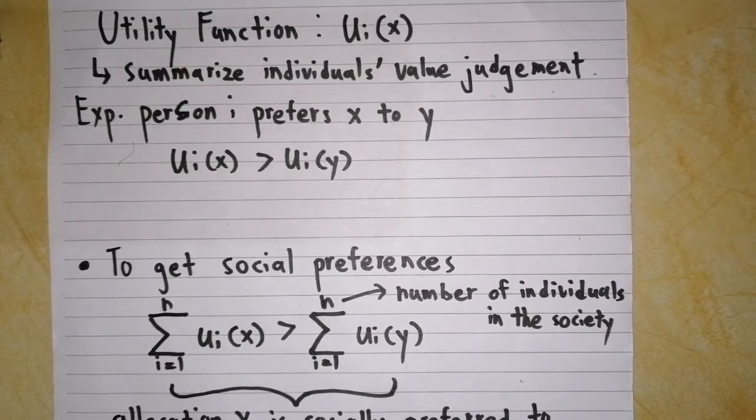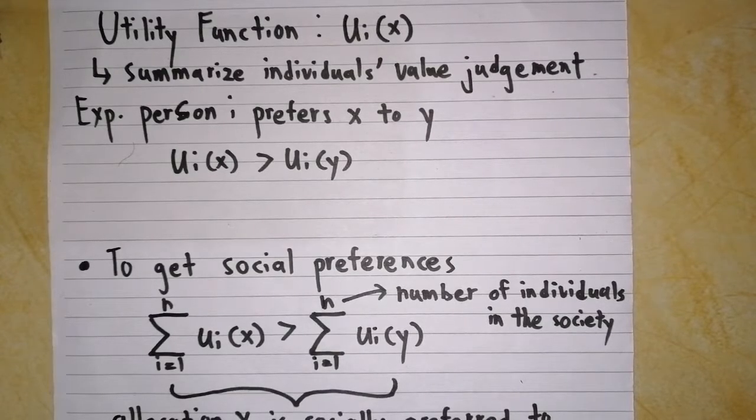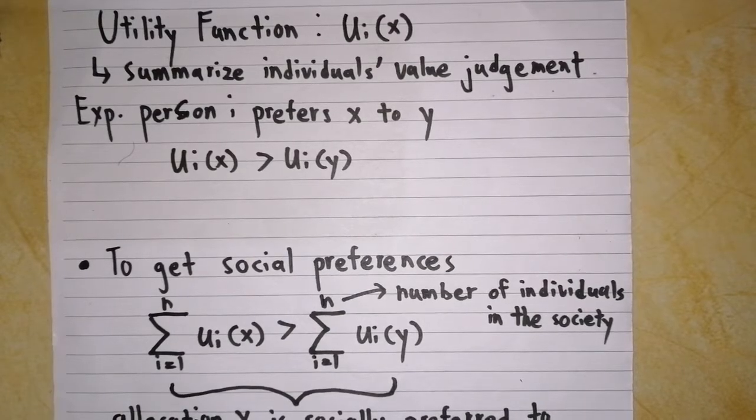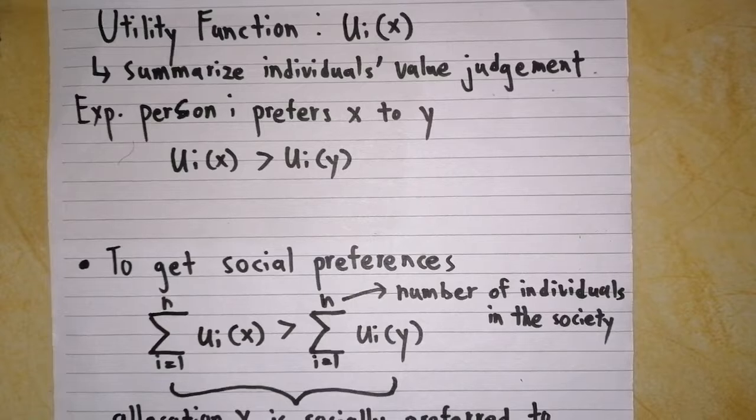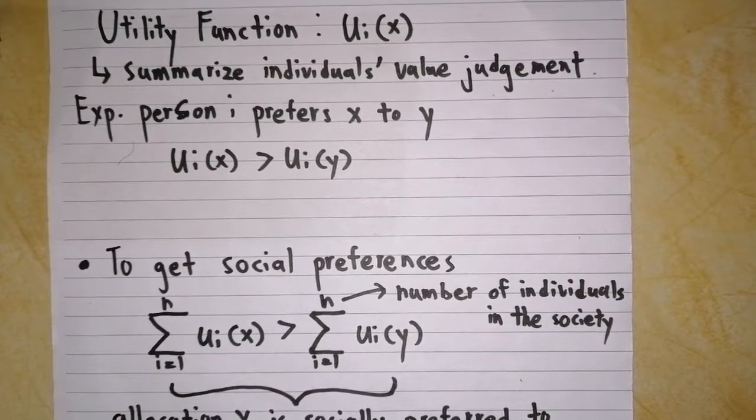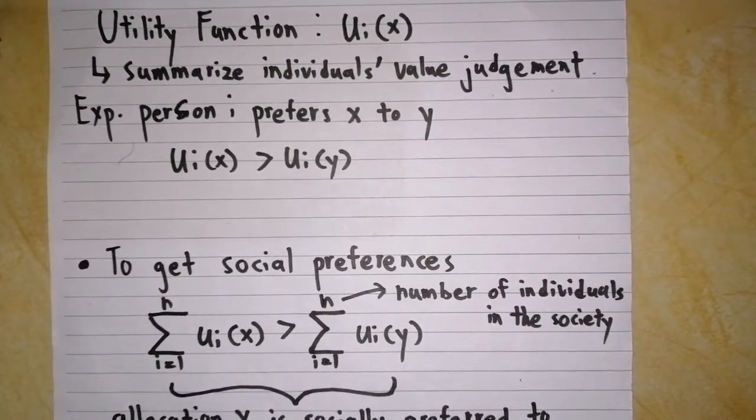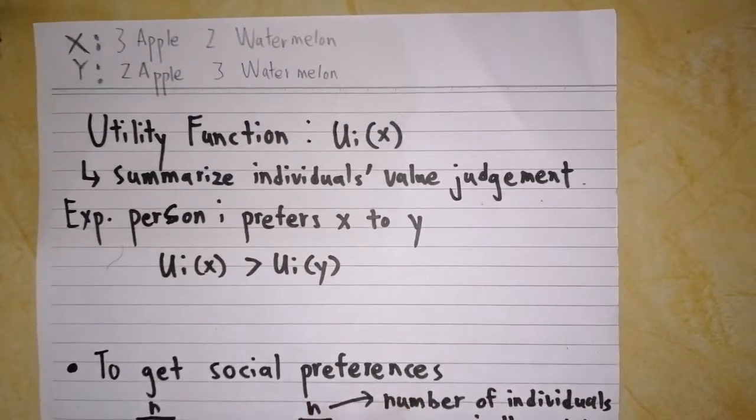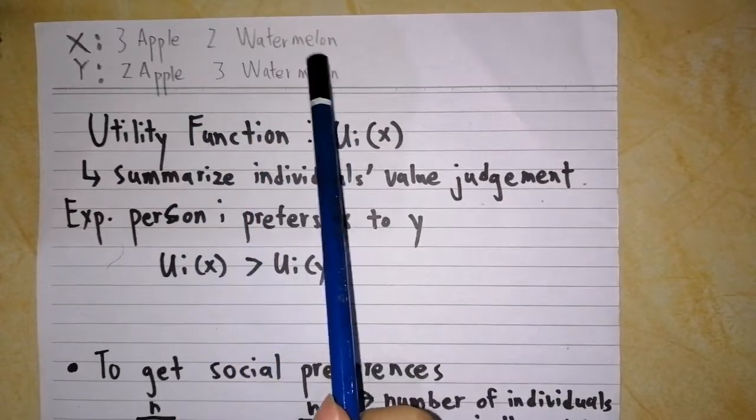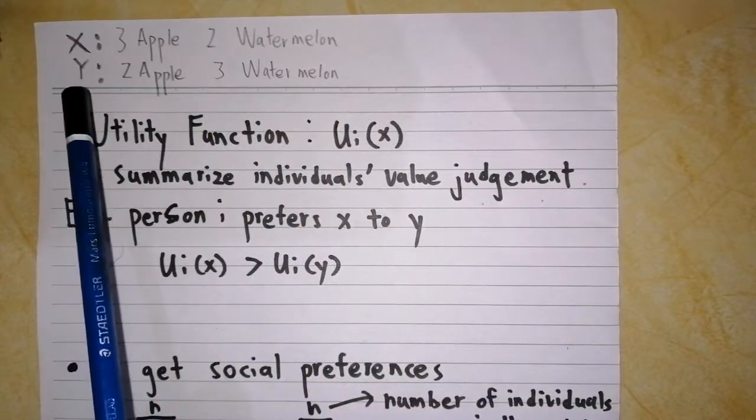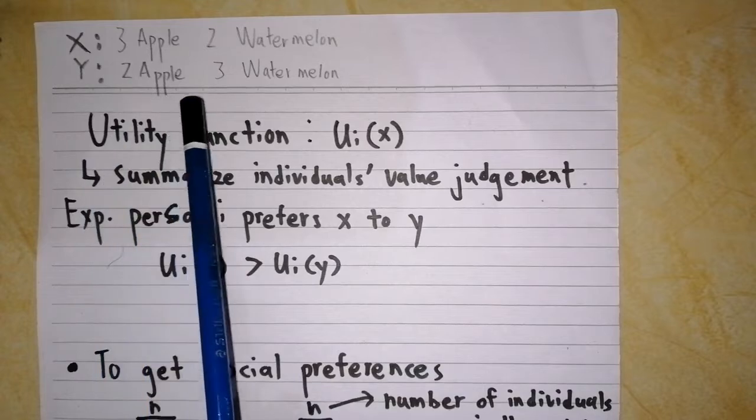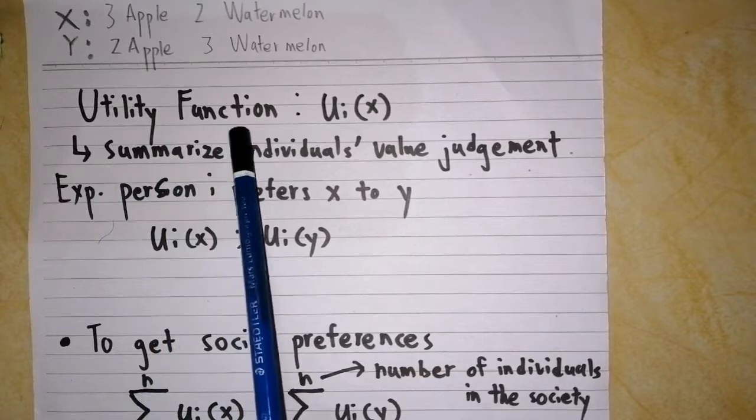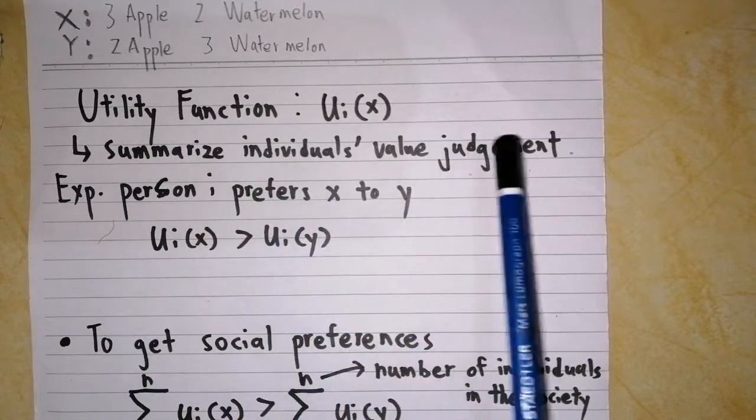After understanding the desired features of social welfare functions and Arrow's impossibility theorem, we can now construct a utility function. I would like to use some examples for allocation X and Y to explain it in an easier way. So suppose that allocation X consists of three apples and two watermelons, while allocation Y consists of two apples and three watermelons. The function of utility function is to summarize individual value judgment.